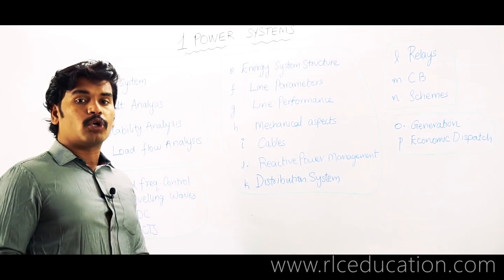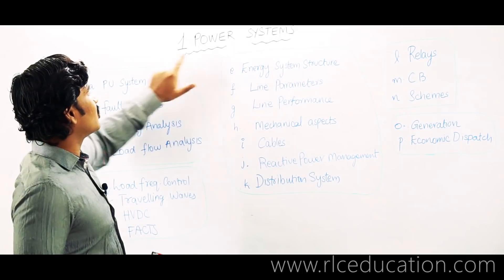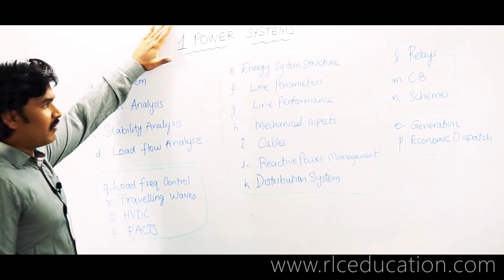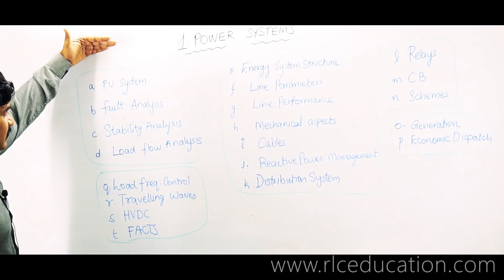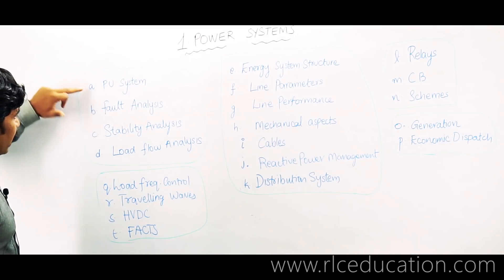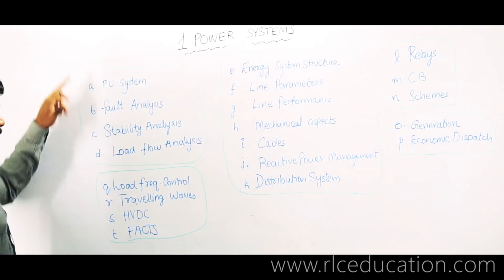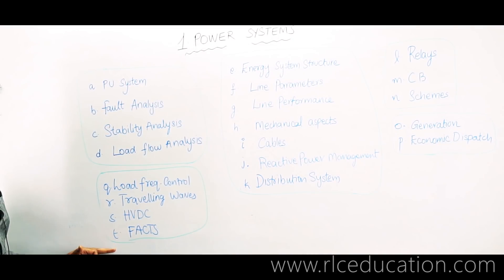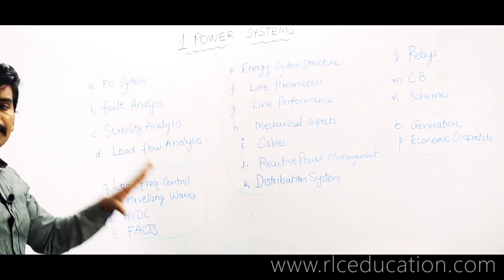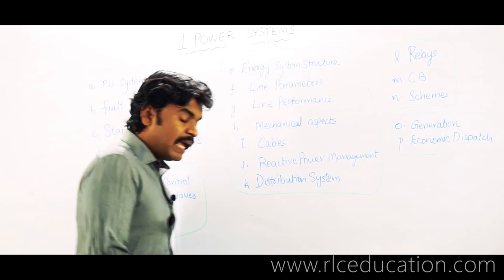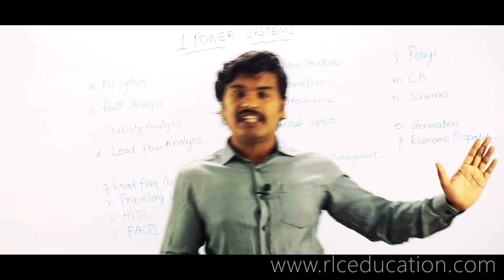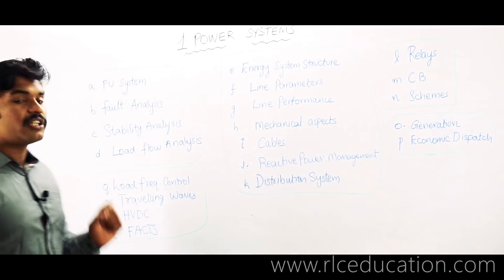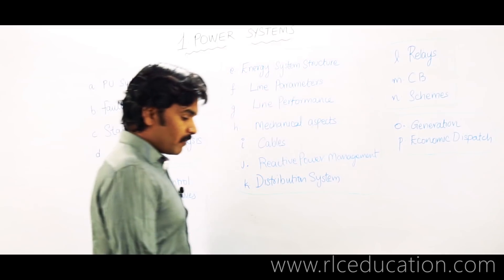In our course, the power system subject is coded as number one. This particular power system subject has different subtopics, starting from A to T — that is, A, B, C, D, E, F, G, H, up to Q, R, S, T. These are the extent of topics available in power systems, mentioned in general for all examinations.